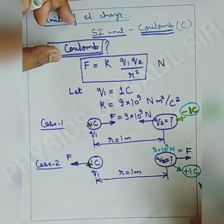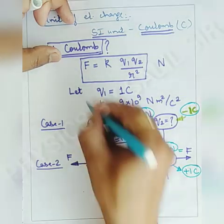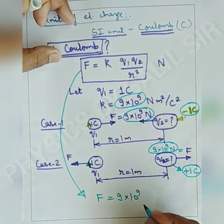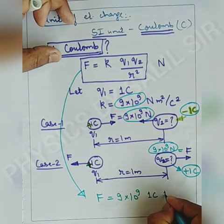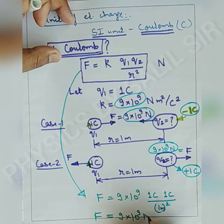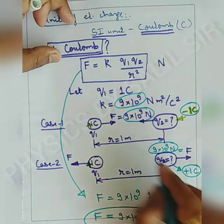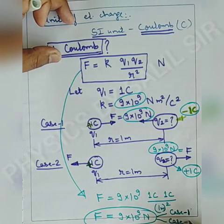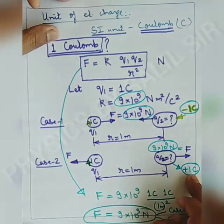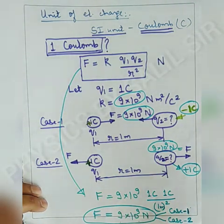We can say definitely, if and only if the force of attraction or repulsion between two charges is 9 × 10⁹ Newton, then putting into the formula: F = 9 × 10⁹ × (1 coulomb × 1 coulomb) / (1 meter)² = 9 × 10⁹ Newton. This is force of attraction in case one (opposite charges) and force of repulsion in case two (same charges). If the force between the two charges is 9 × 10⁹ Newton, then Q2 should be one coulomb.